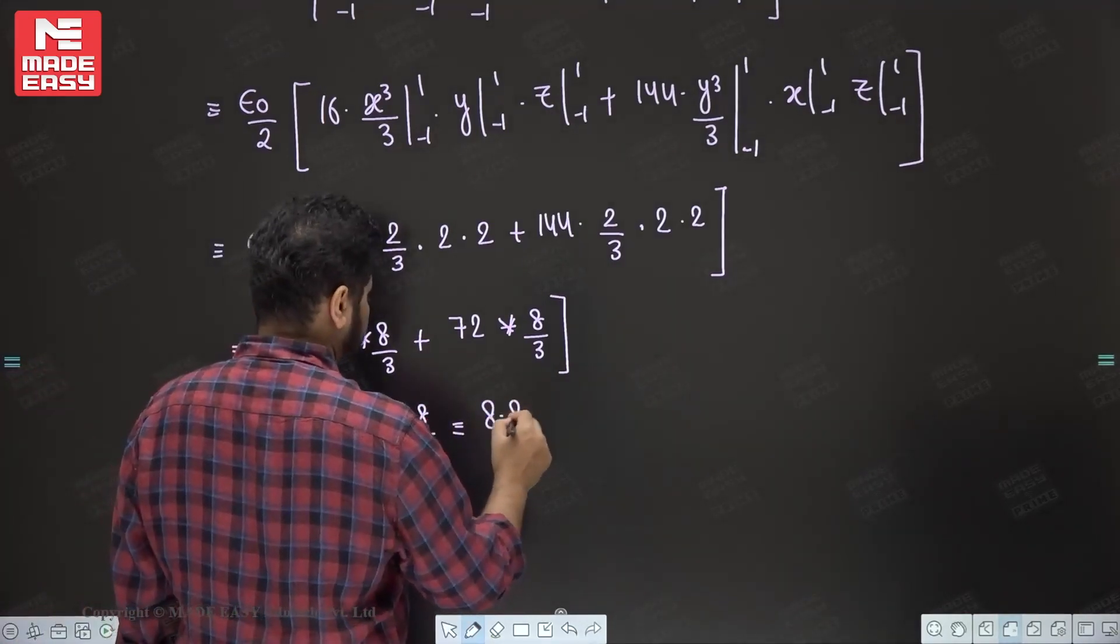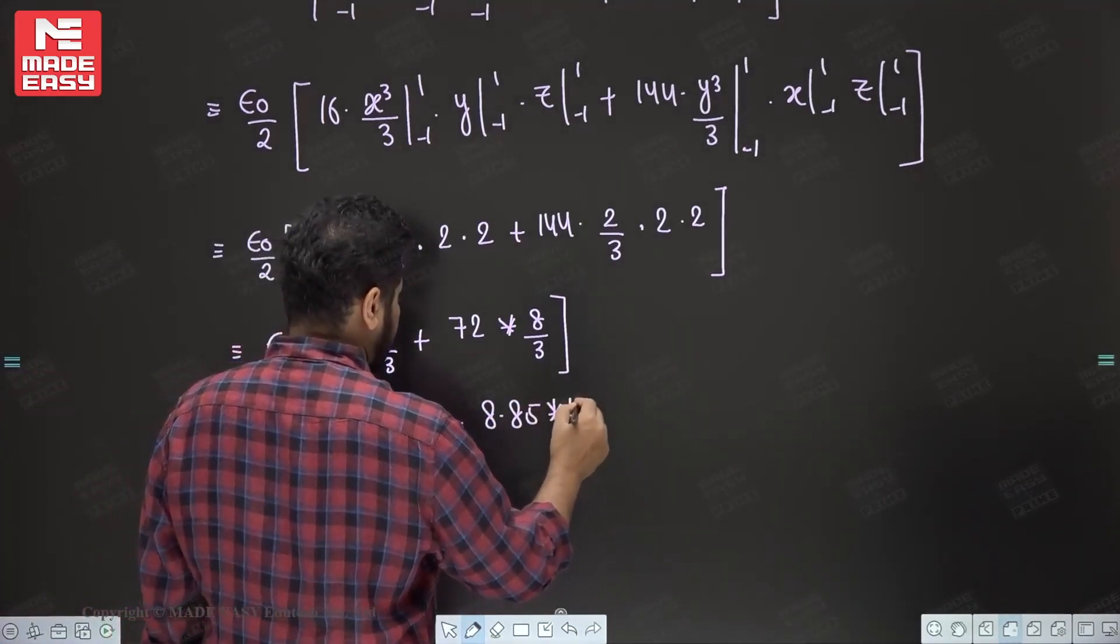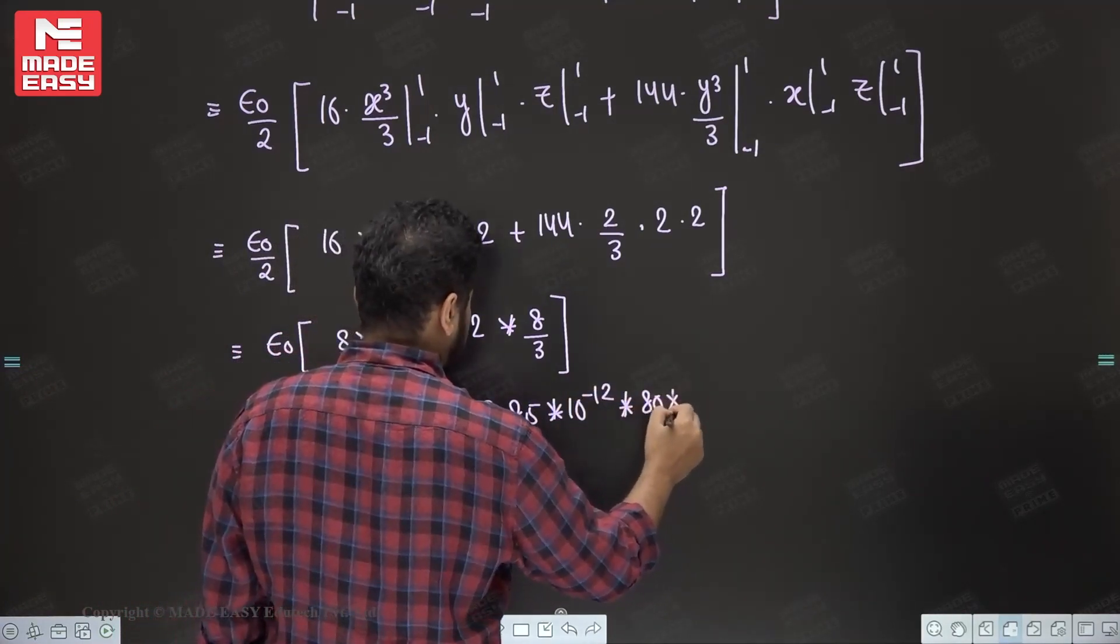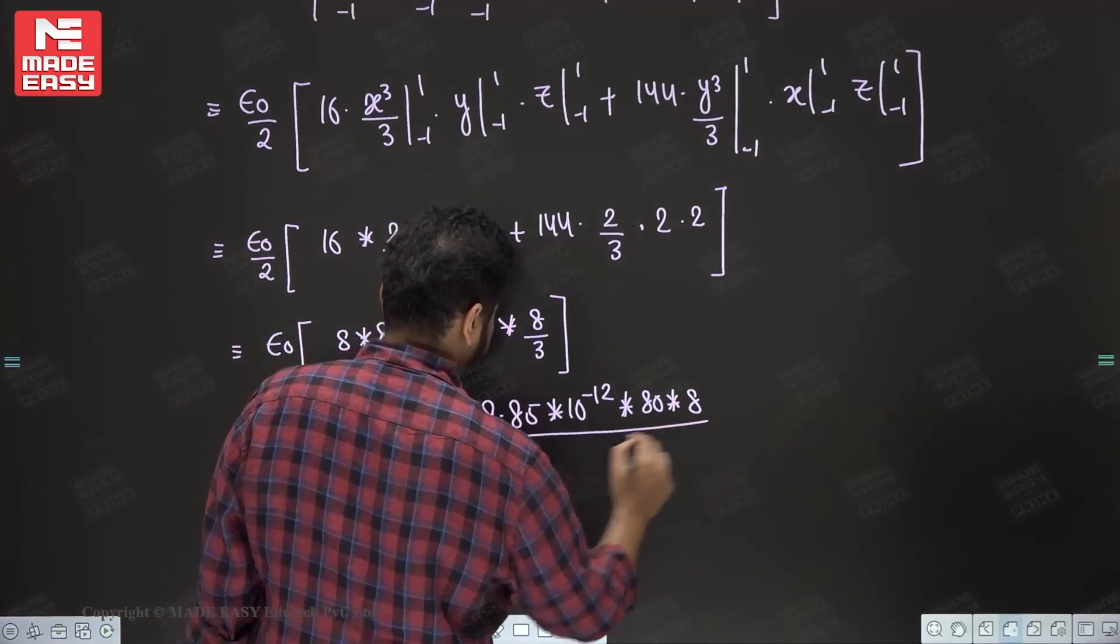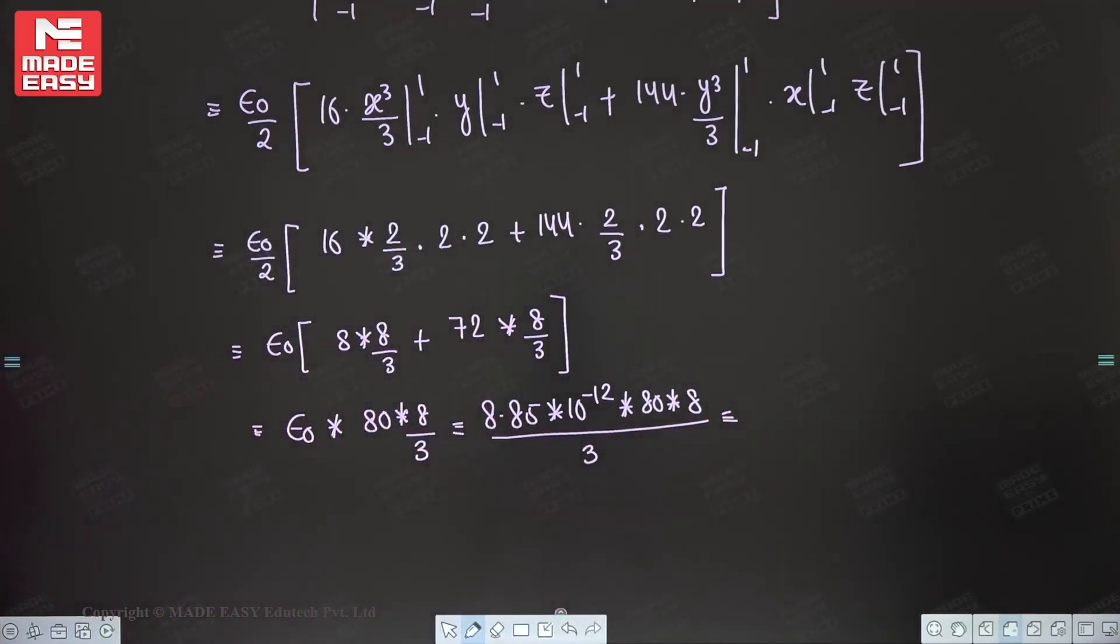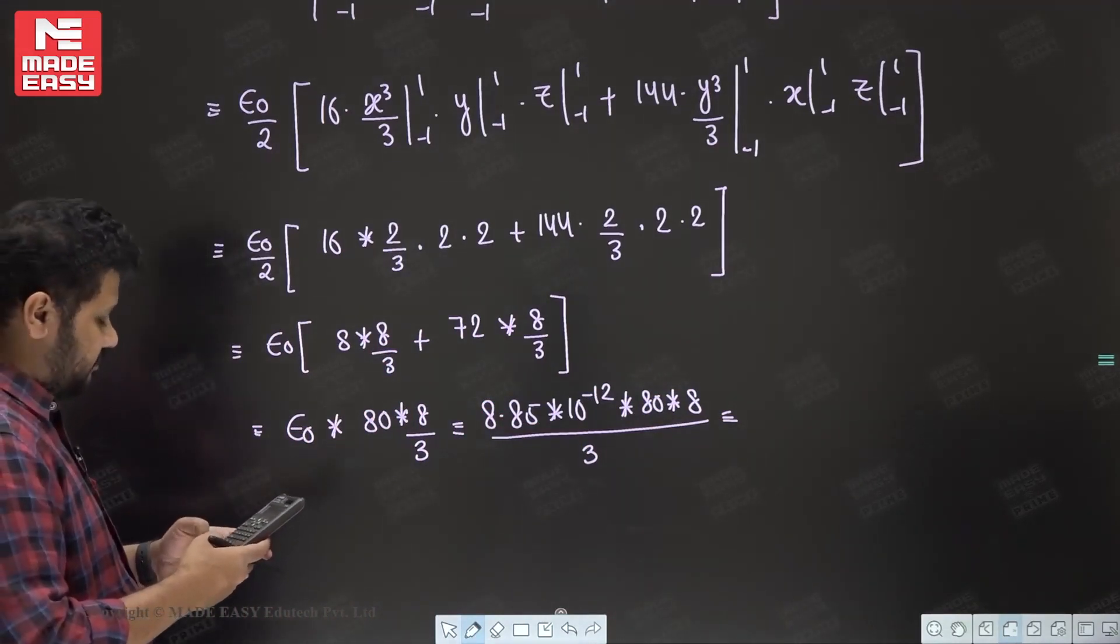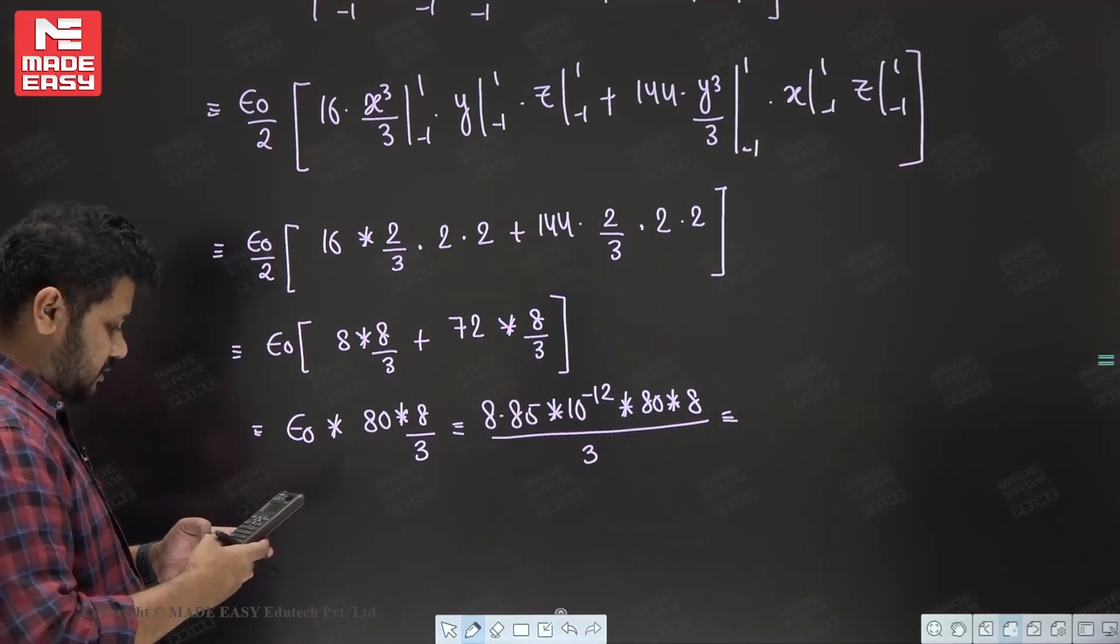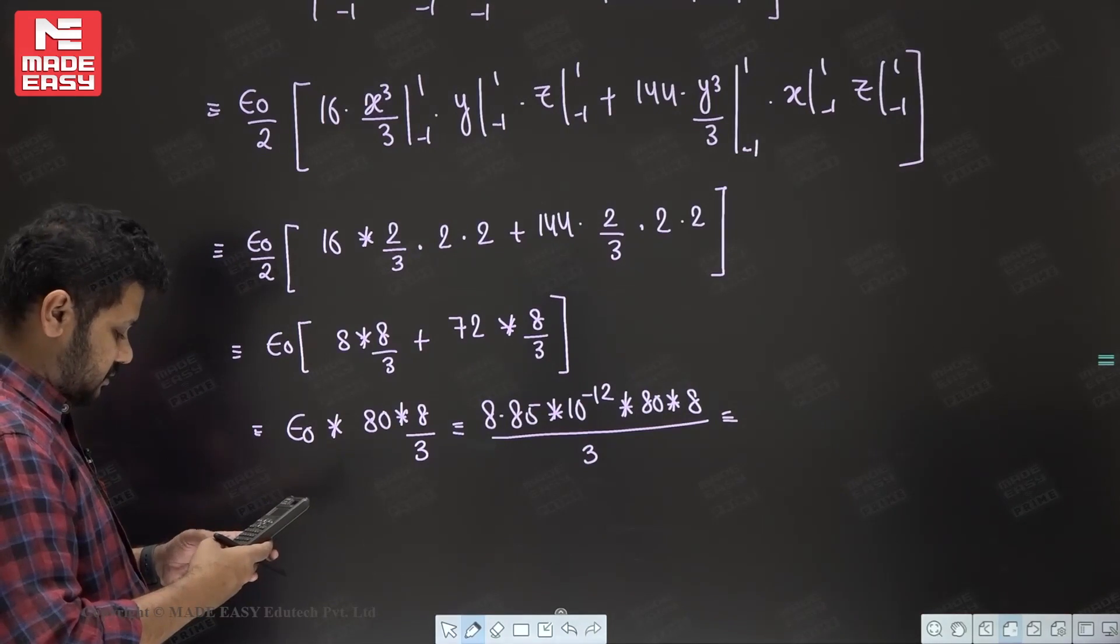So this is your 8.85 × 10⁻¹² into 80 into 8 divided by 3. So let us calculate it using the help of calculator. 8.85 to the power minus 12 into 80 into 8 divided by 3.